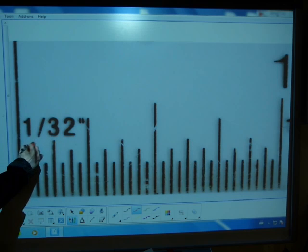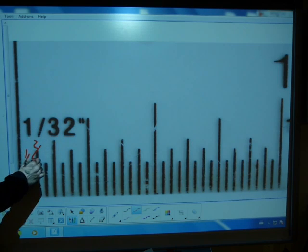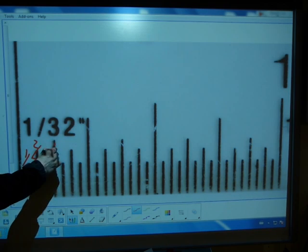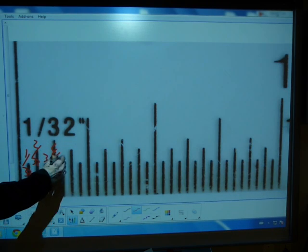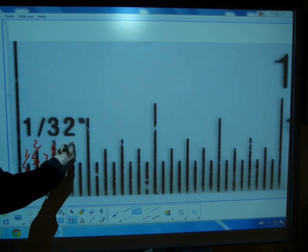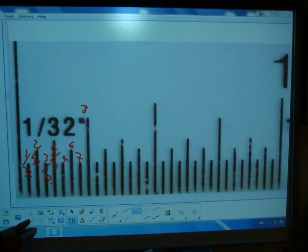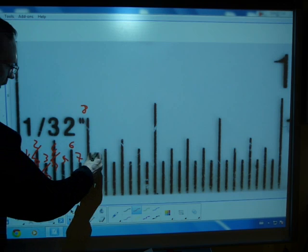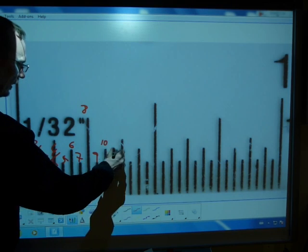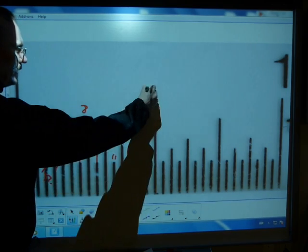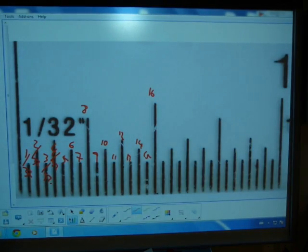That's 1/32nd, that's the second line, so that's 2/32nds, 3/32nds, 4/32nds, 5/32nds, 6/32nds, 7/32nds, 8/32nds, you get the idea, 9/32nds, 10, 11, 12, 13, 14, 15, 16/32nds.